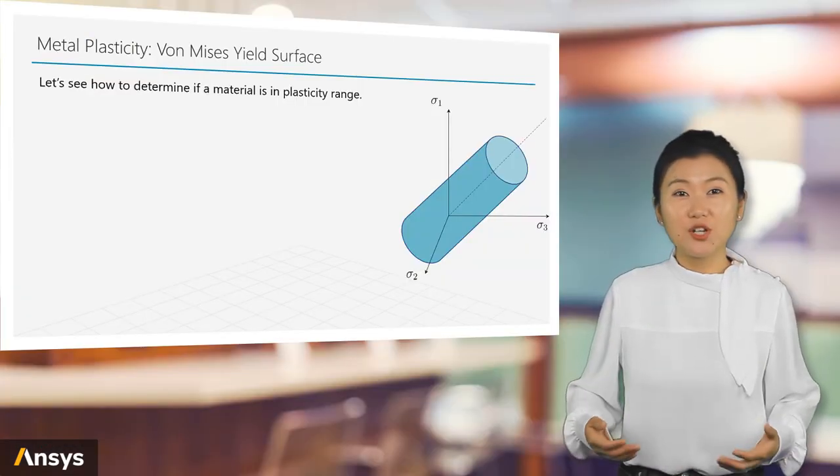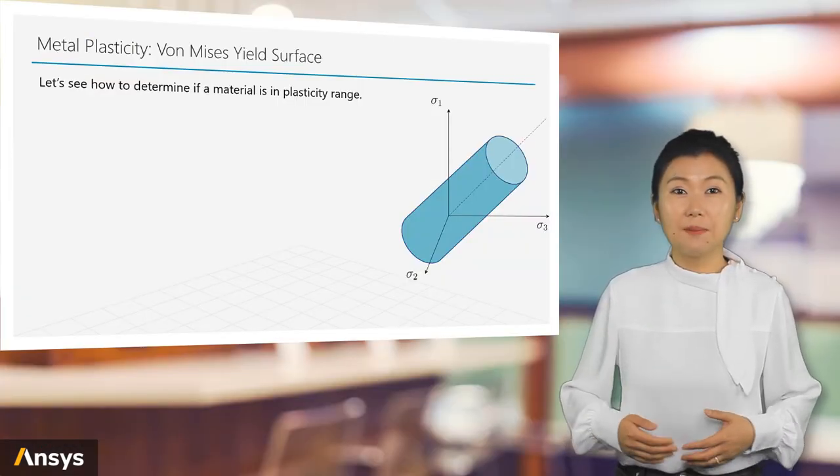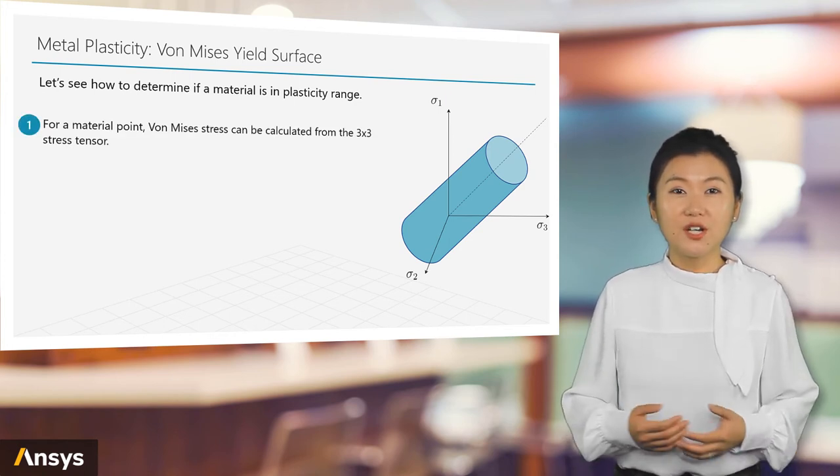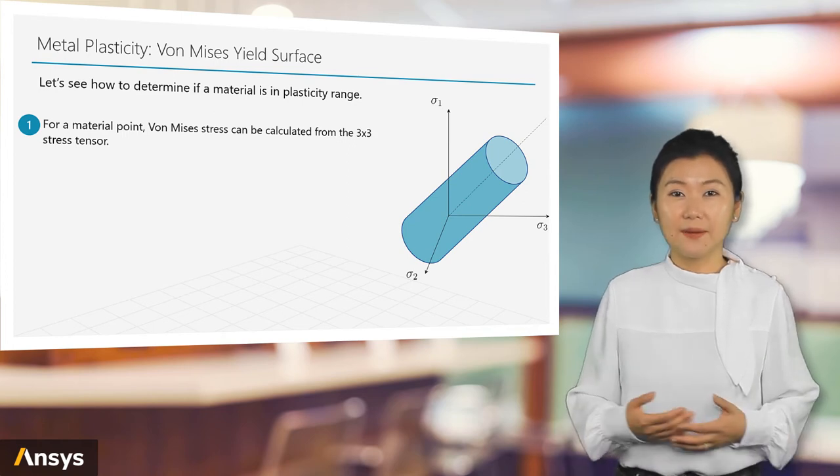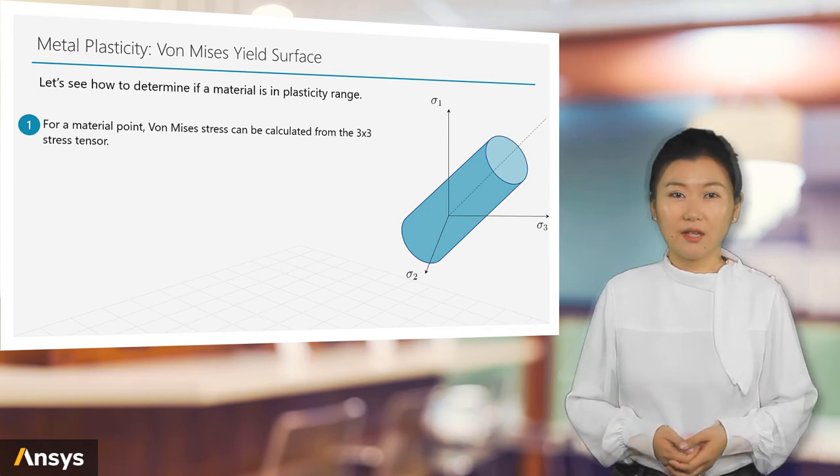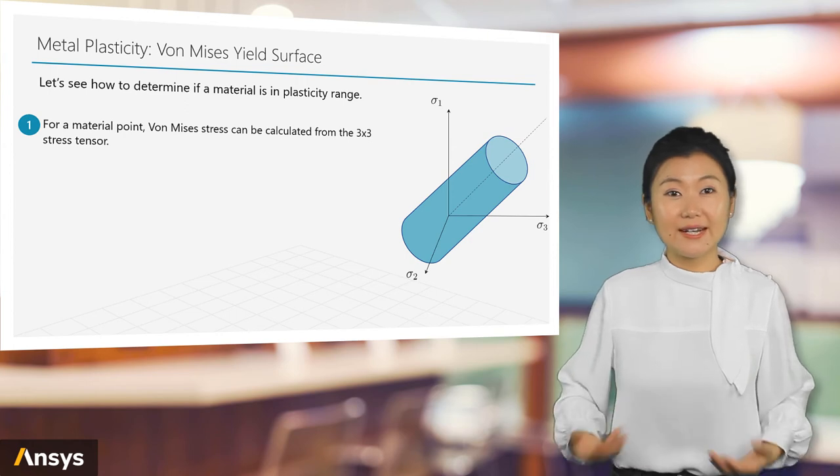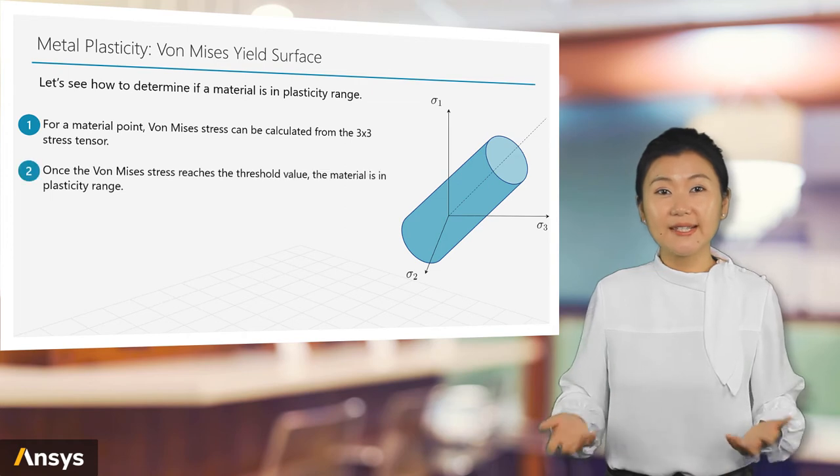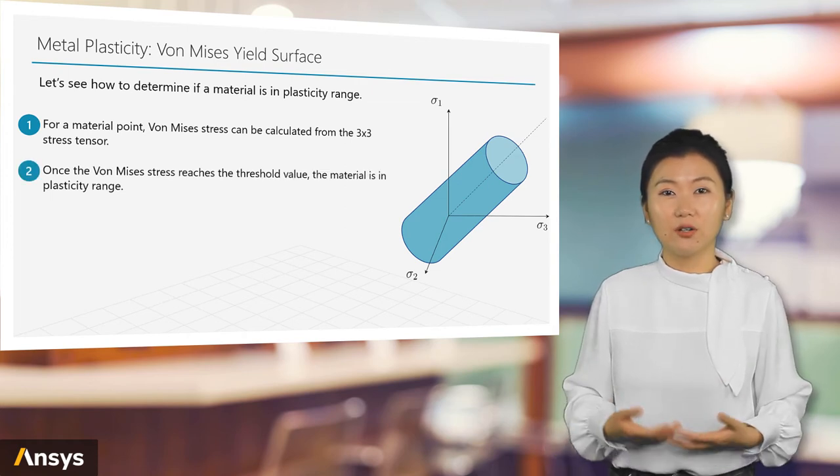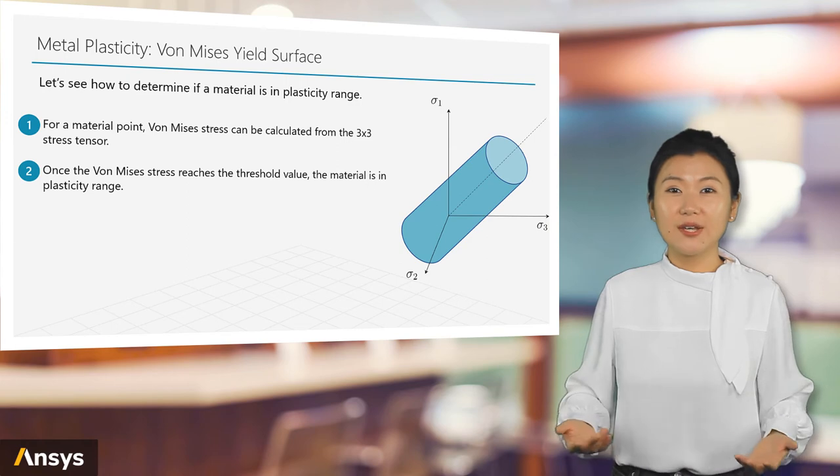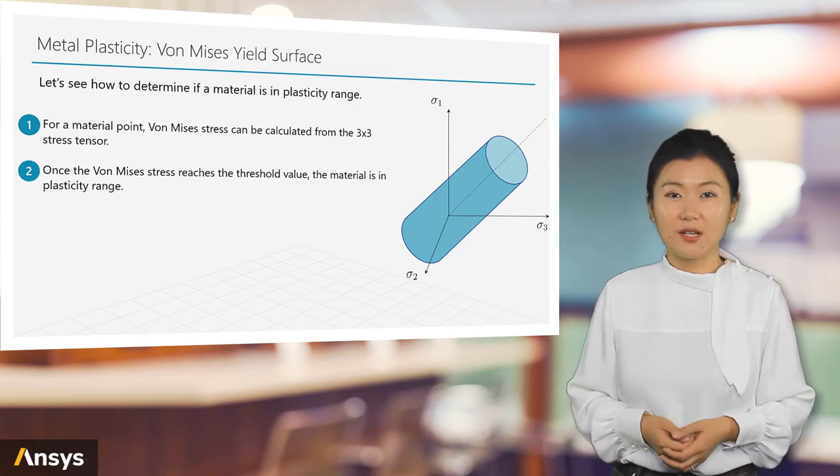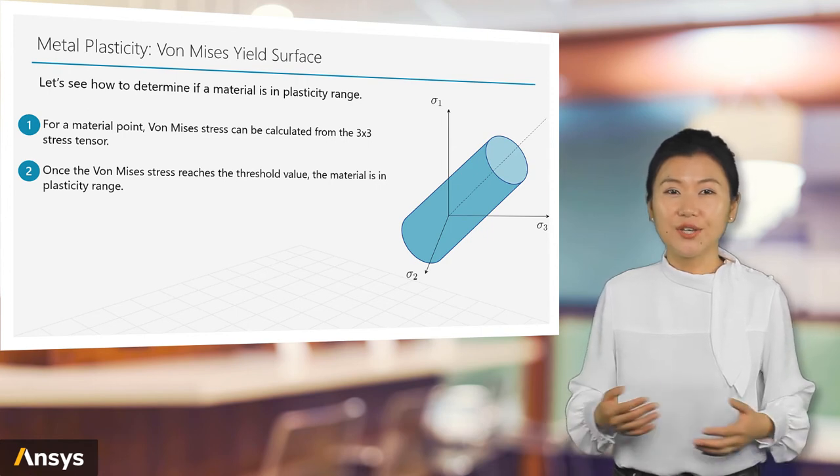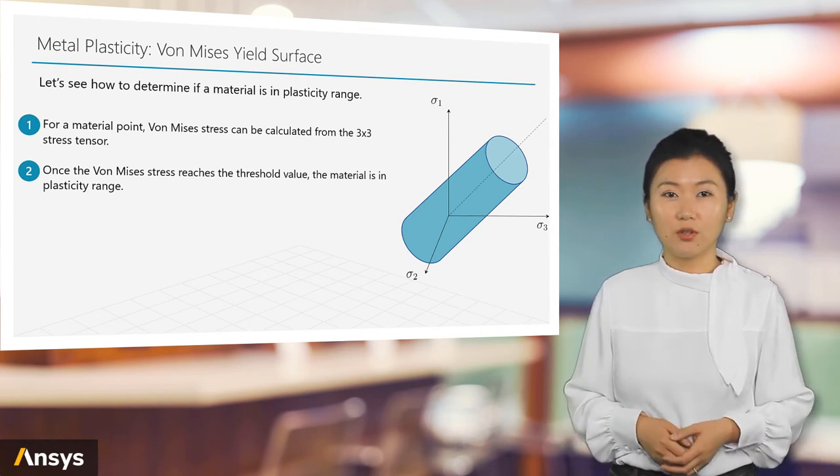We showed that the expression of Von Mises stress can be figuratively represented by the cylindrical surface. Note that on one cylindrical surface, the Von Mises stresses are all the same for all points, and there is a specific cylindrical surface with a certain Von Mises stress value. For a stress state inside this surface, the material is in linear elasticity, and for a stress state on this surface, the material is in plasticity.